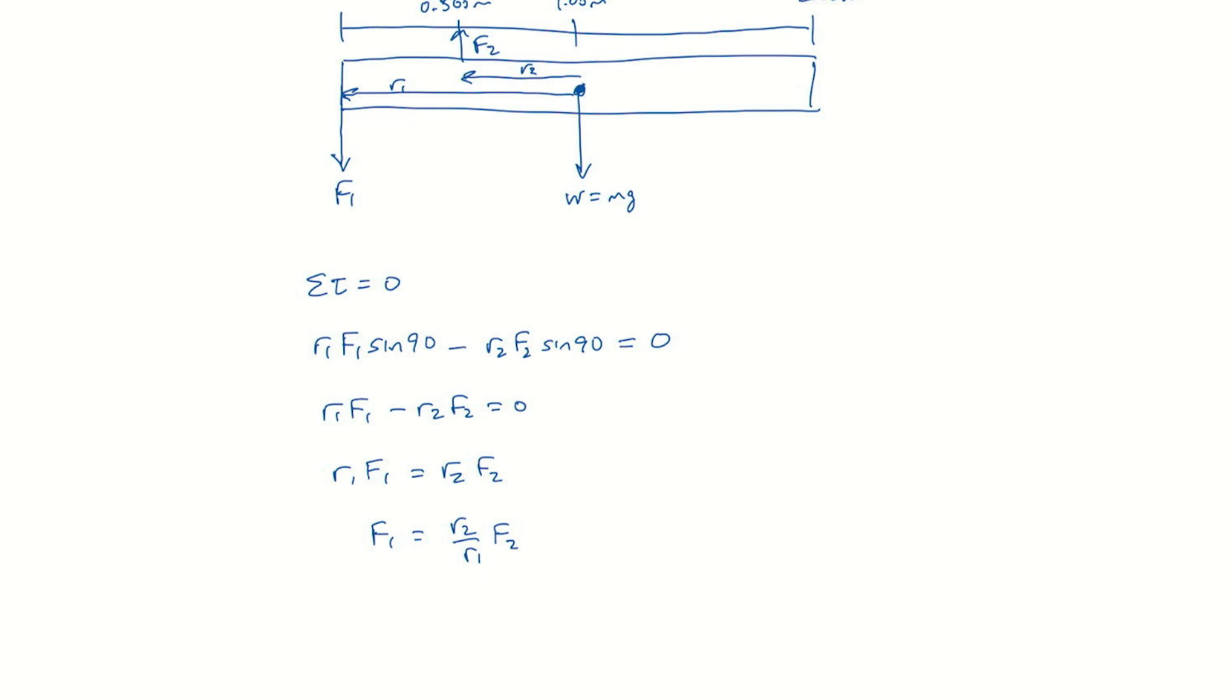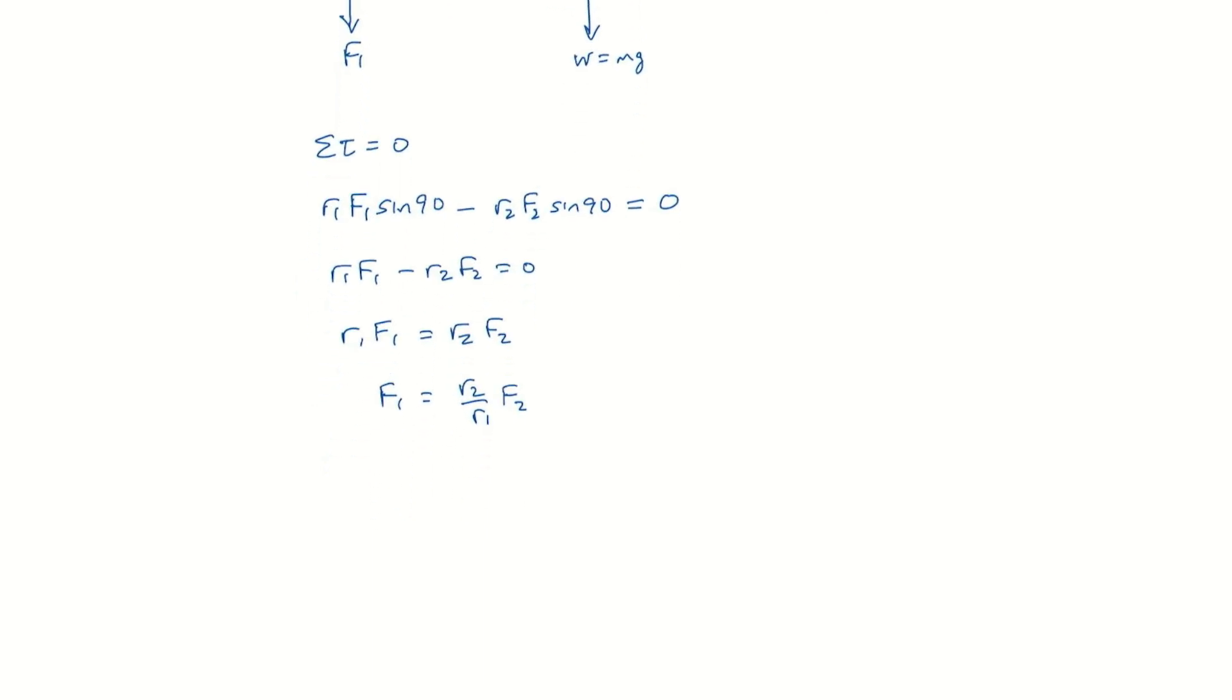We can see that R1 is 1 meter, because it's going from the center to the end. F2 is applied at the 0.5 mark, so R2 is also 0.5. And so what we have is F1 is 0.500 meters over 1.00 meters times F2. So F1 is 0.500 times F2.